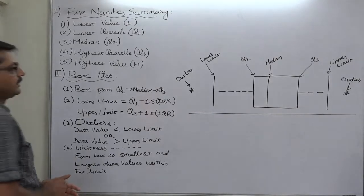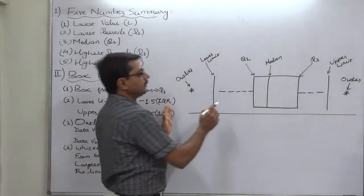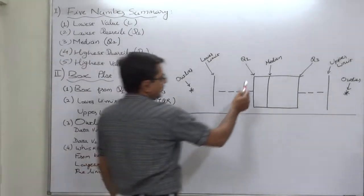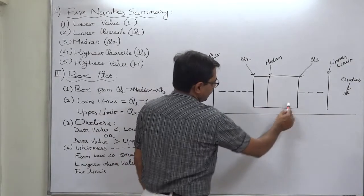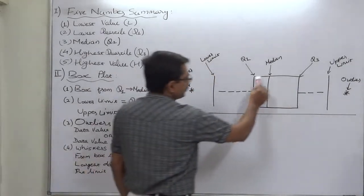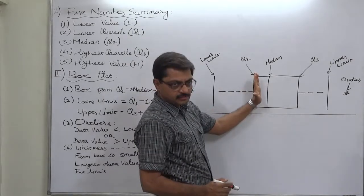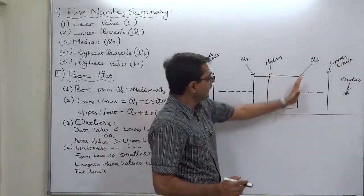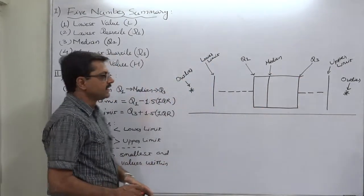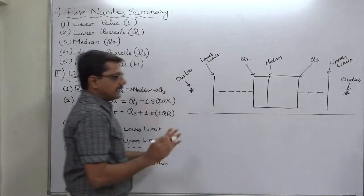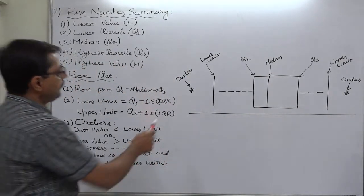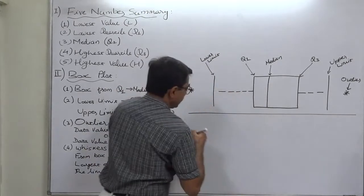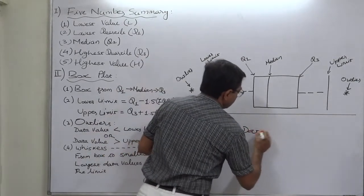Now, we can draw the box plot. In the box plot, the box starts from first quartile and ends at third quartile. A shape of box is drawn that starts from first quartile, then it is a vertical line for median, and then it ends at quartile 3. A shape of closed box is there.